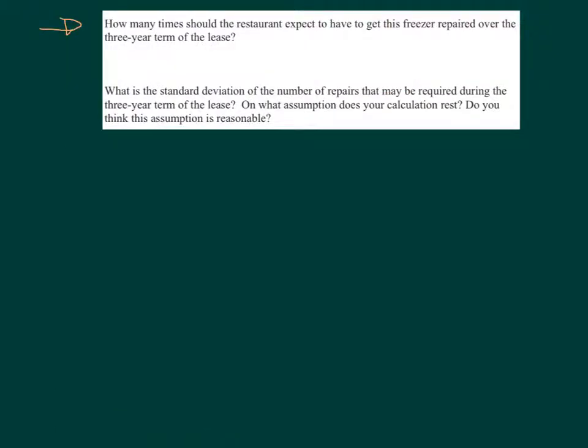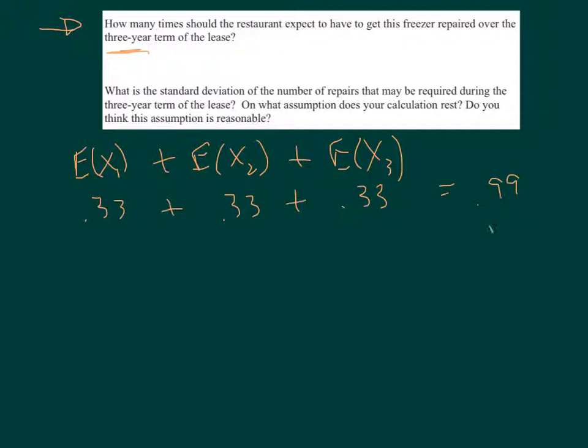Now, we'll move on to addressing the question: how many times should the restaurant expect to get this freezer repaired over the three-year term? So we know that we have an expected value of year one at 0.33, and it's going to be 0.33 for each year, because each year should be reasonably independent of the year prior, although that doesn't matter for expected value. It does for standard deviation, however. So if we have three different years, we're just going to add them all up, and what do we end up with? 0.99 repairs over the three-year lease. That's our expected value.